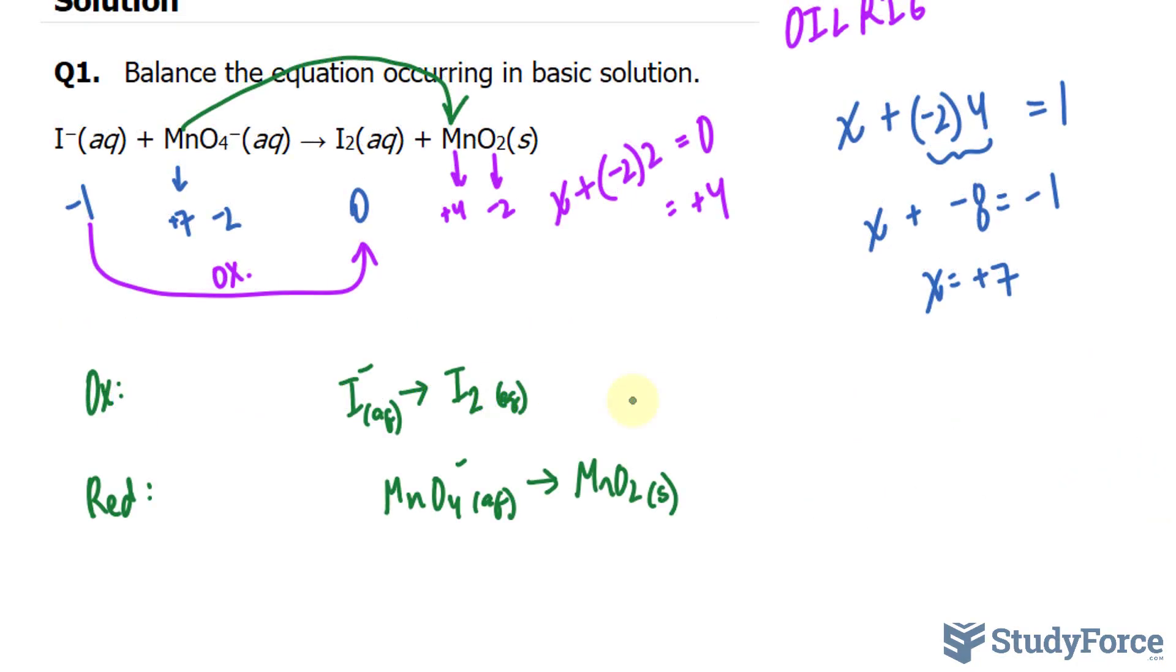Both of these half reactions at this point need to be balanced both in mass and in charge. Starting with mass and the oxidation reaction, we have two molecules of iodine here and one here, so I'll place a 2 in front of I minus.